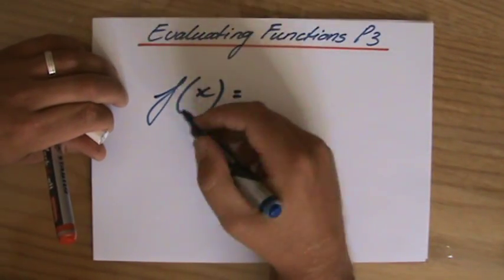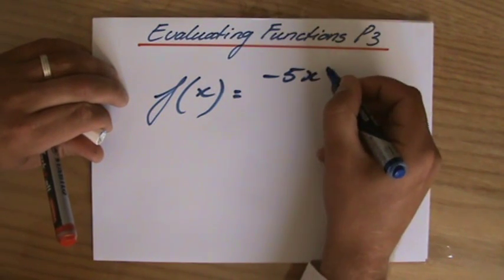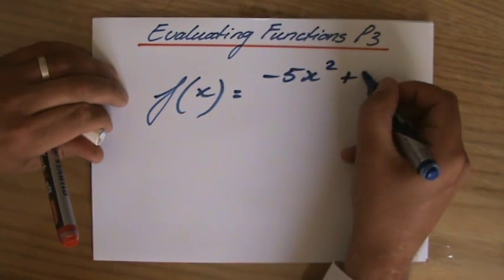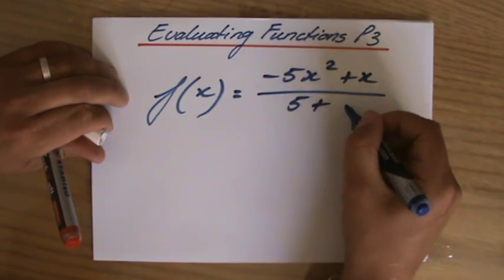Let's say we have a function where the variable is x. I can do anything. Minus 5x squared plus x over 5 plus 2x.